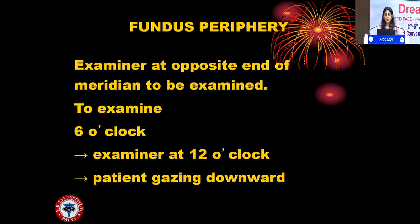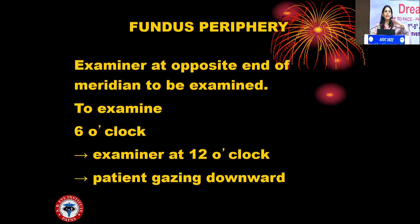Once the posterior pole is examined, for peripheral examination the examiner stands at the opposite end of the meridian to be examined. To examine the 6 o'clock, the examiner stands at 12 o'clock and the patient gazes downward. The most common query from postgraduates is: how do we know which quadrant we are actually seeing? The quadrant in view is the one you are examining. The image is real and inverted — only left is right and right is left. This is a very important concept to understand.